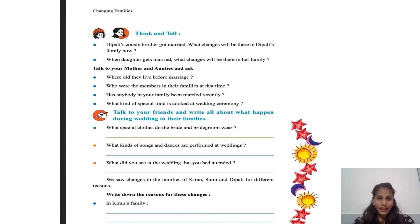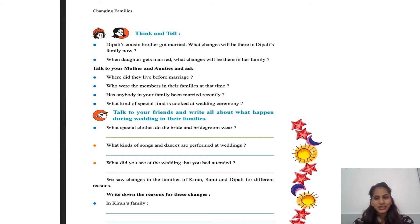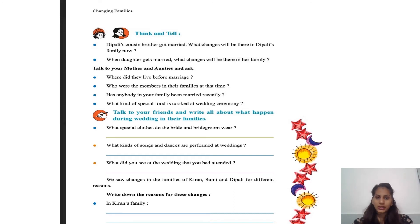Talk to your mother and aunties and ask where they lived before marriage. Who were the members in their families at that time? Has anyone in your family been married recently? What kind of special food is cooked at a wedding ceremony? What special clothes do the bride and bridegroom wear? What kind of songs and dances are performed at weddings? What did you see at a wedding you attended? Write all about what happened during weddings.